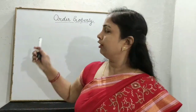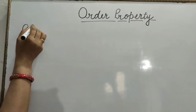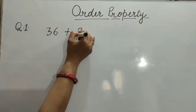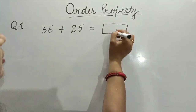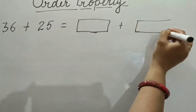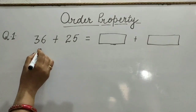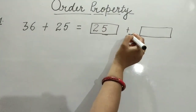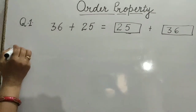Let's solve more questions based on order property. Question number 1: 36 plus 25 is equal to what? Children, we change the order of numbers. Write 25 first, plus 36. The sum will be the same.